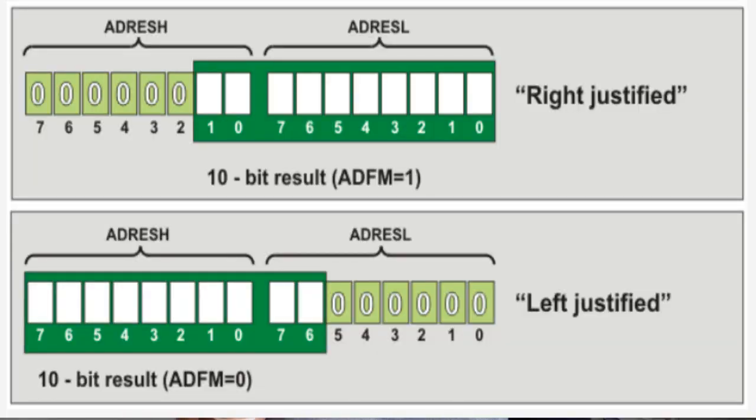In right justified format, the lower 8 bits of the result are stored in ADRESL and the upper 2 bits are stored in ADRESH, with the higher 6 bits of ADRESH unused. In left justified format, 8 bits are stored in ADRESH and 2 bits in ADRESL, with the lower 6 bits of ADRESL unused. We will cover this in the ADCON0 and ADCON1 register explanation.